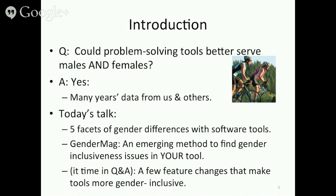I want to talk to you about five facets of gender differences that can appear in software tools, mostly for problem-solving — tools like debuggers, spreadsheets, decision support systems, privacy settings — any situation in which the user is trying to solve some kind of problem and the system's job is to support that activity. I'll also be talking about a new method called GenderMag, which is an emerging method to find gender inclusiveness issues in your tool, and if there's time, some feature changes that make tools more gender inclusive.